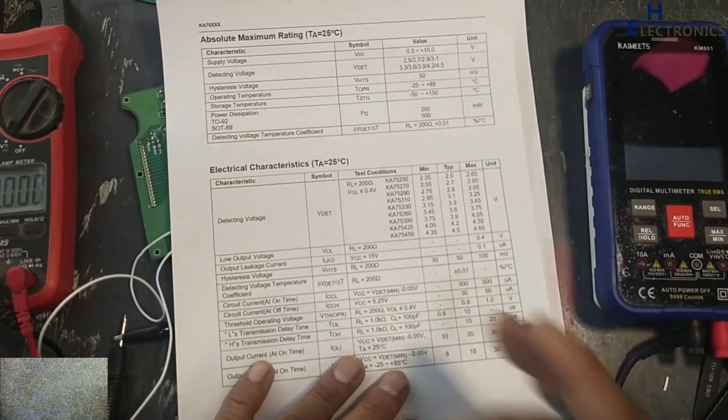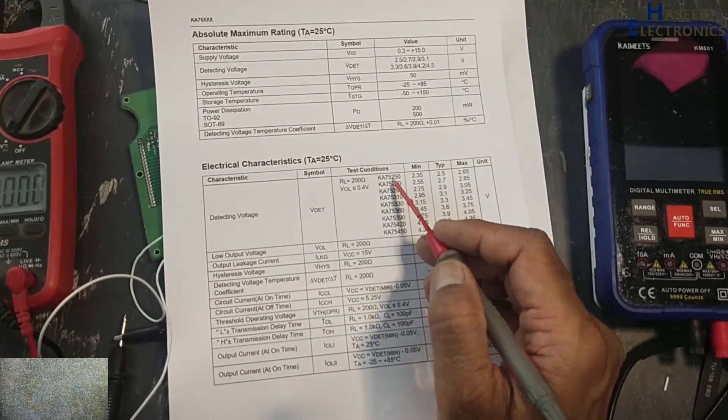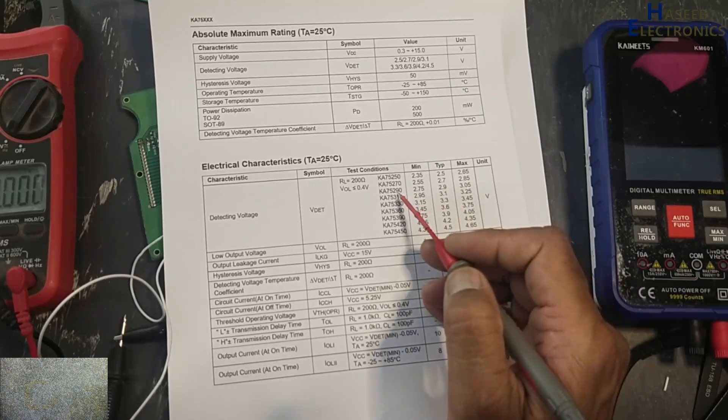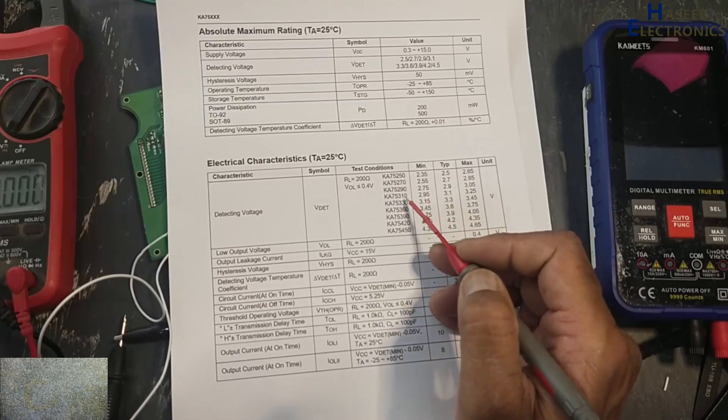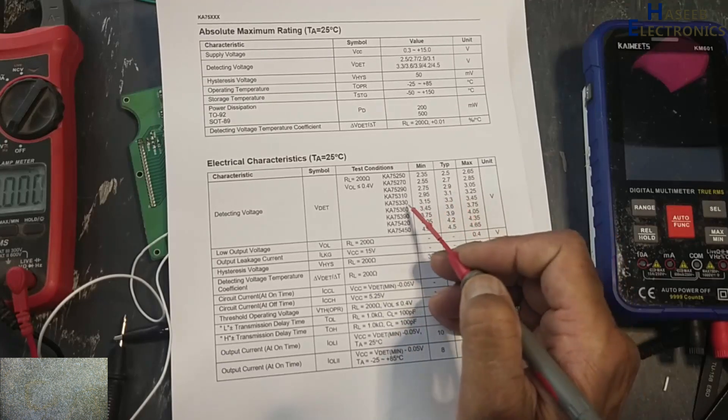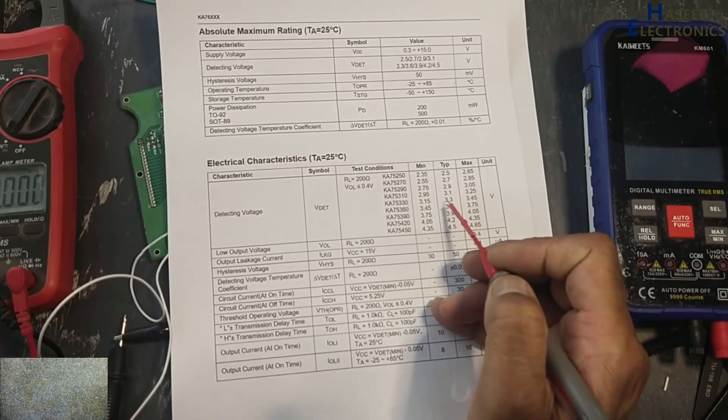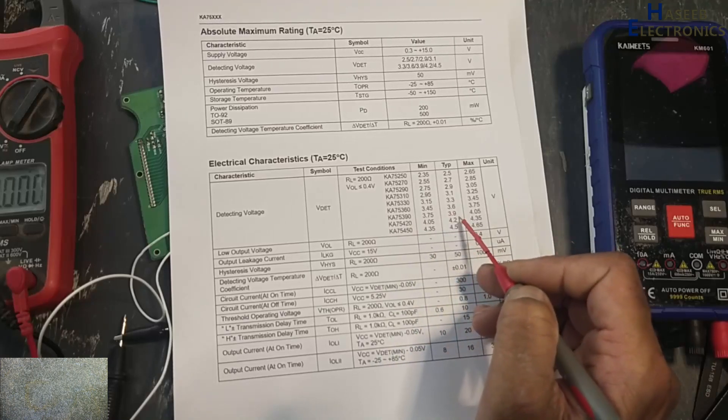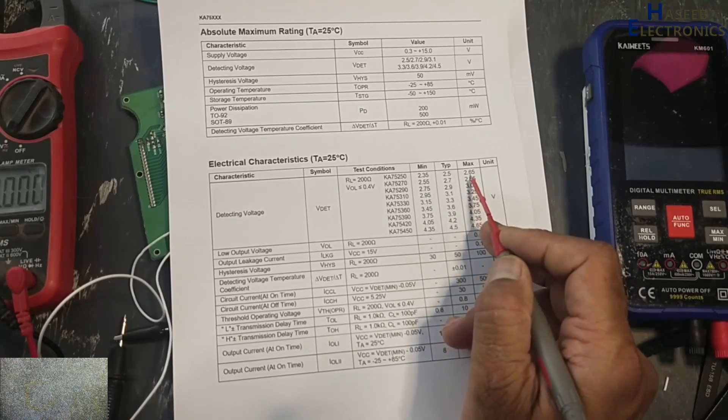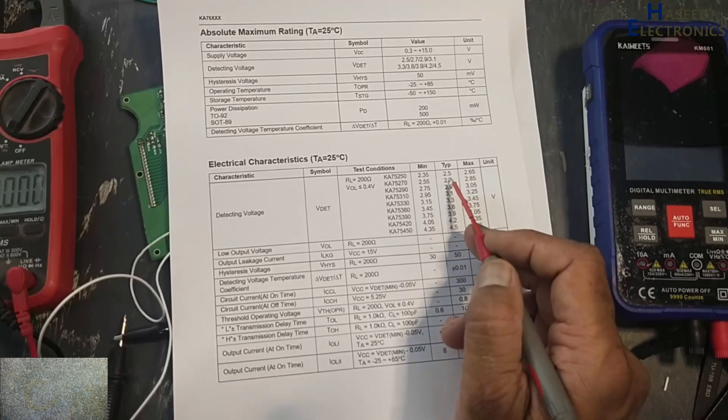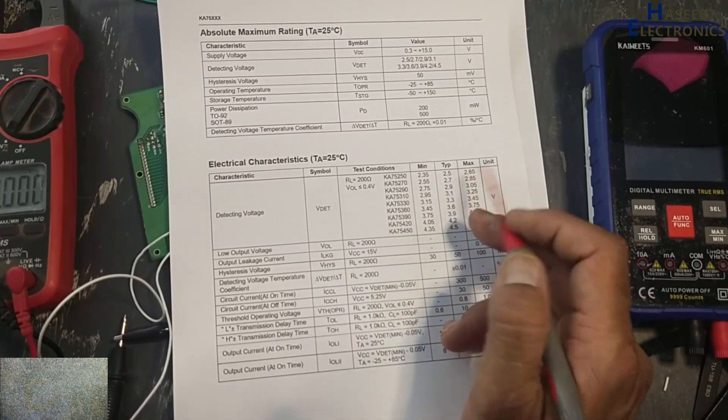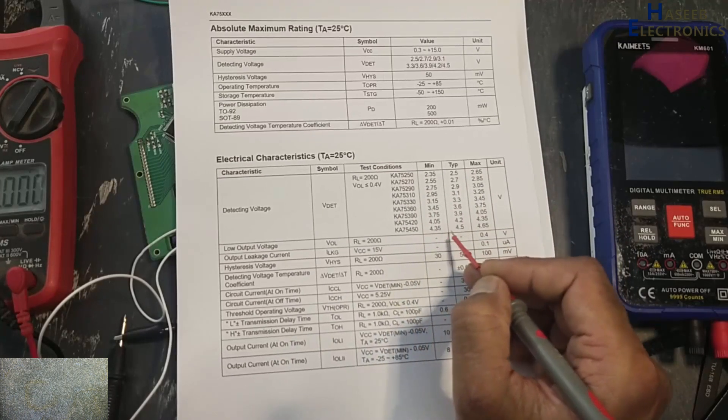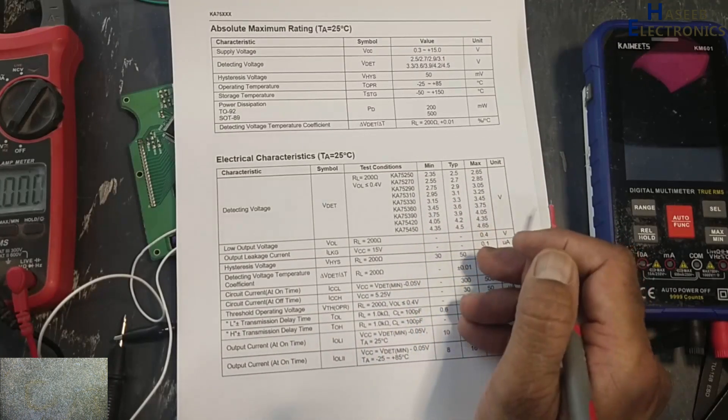It is available in different numbers: KA75250, that is for 2.5 volt; 270, 2.7 volt; 290, 2.9 volt; 310, 3.1 volt; 330, that is 3.3 volt; 360, 3.6 volt; 390, 3.9 volt. There are minimum and maximum limits, but the standard value, that is 250, that is 2.5 volt.